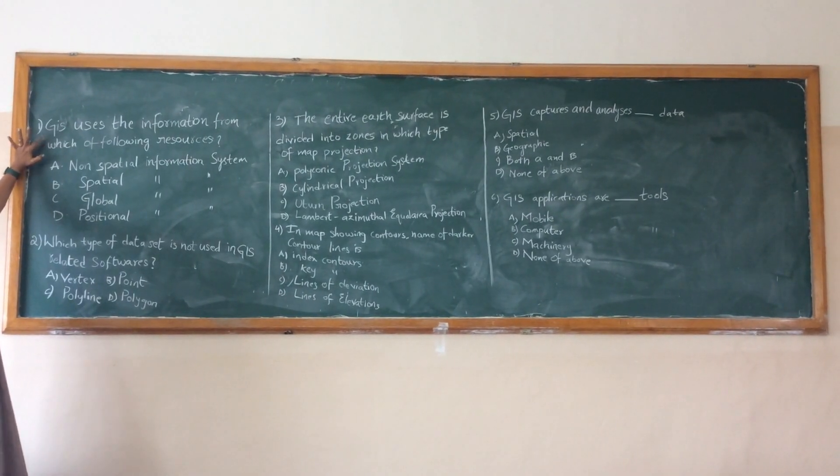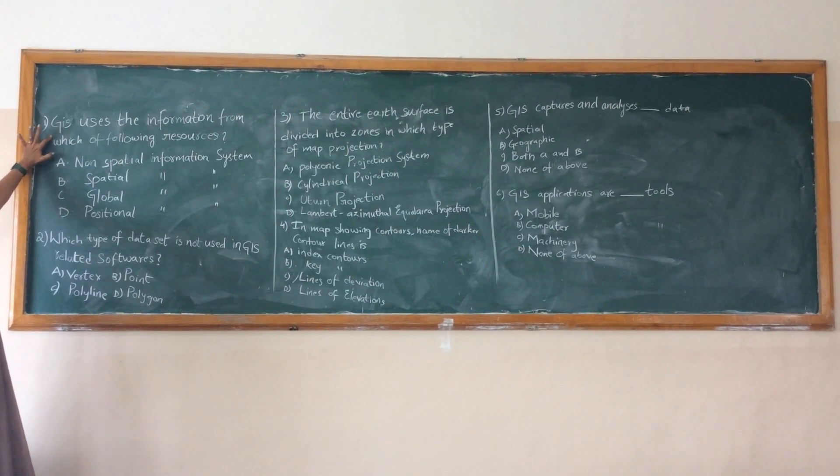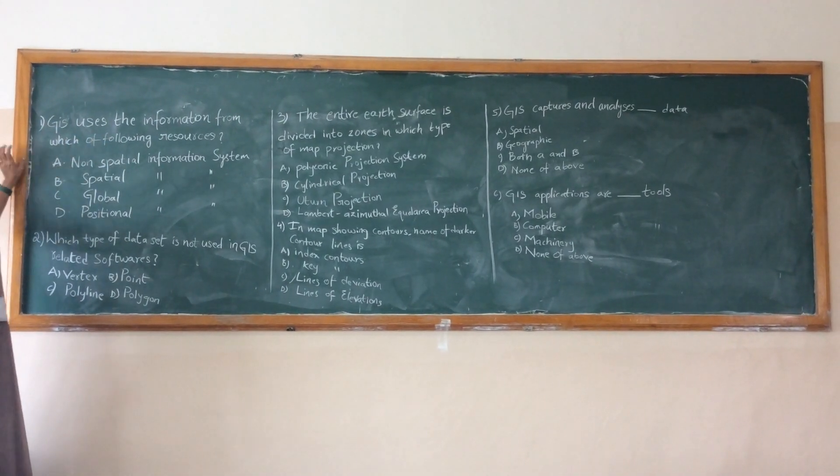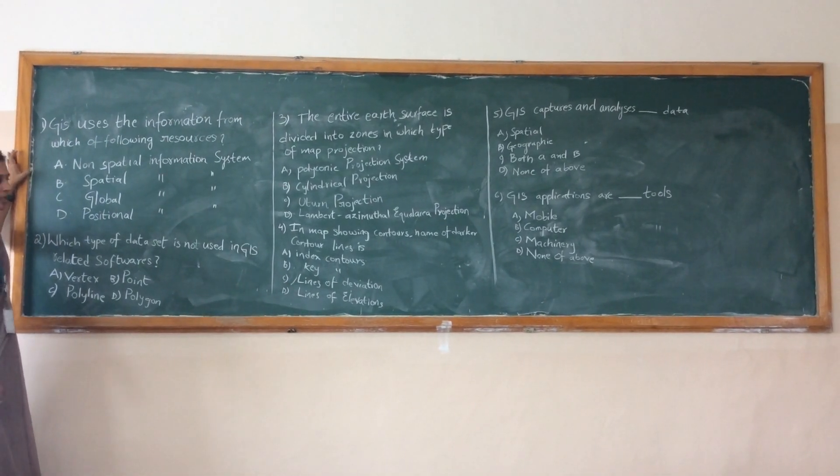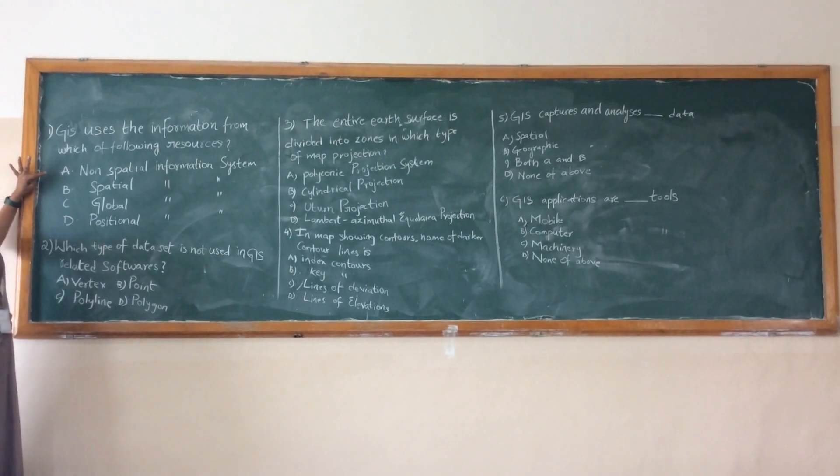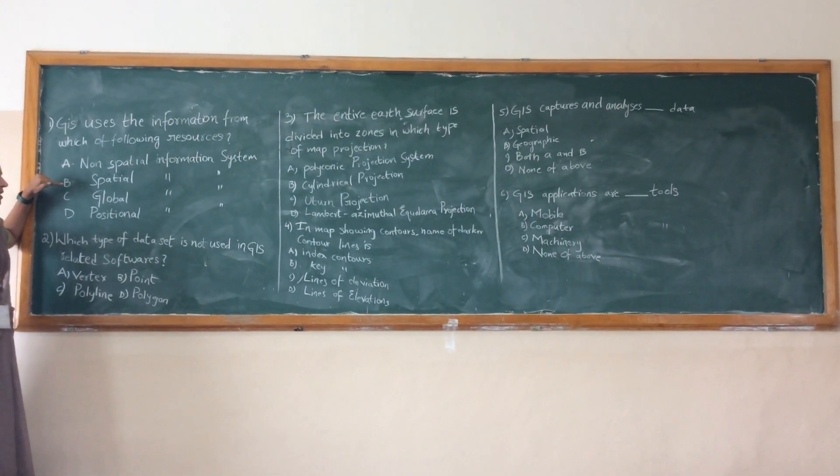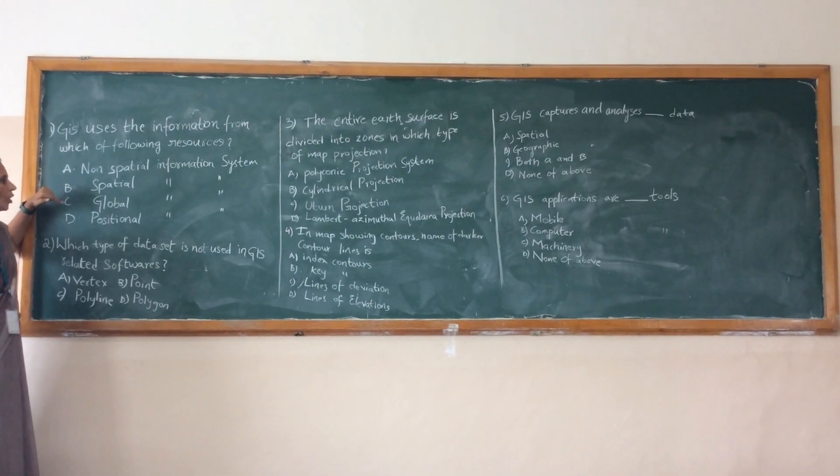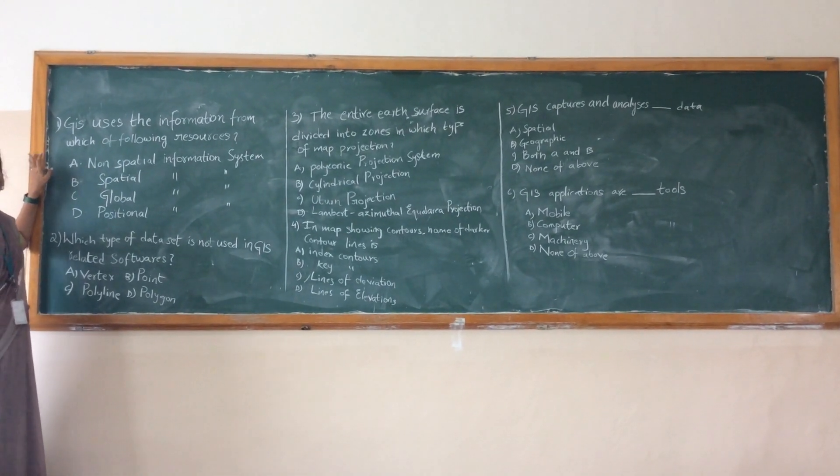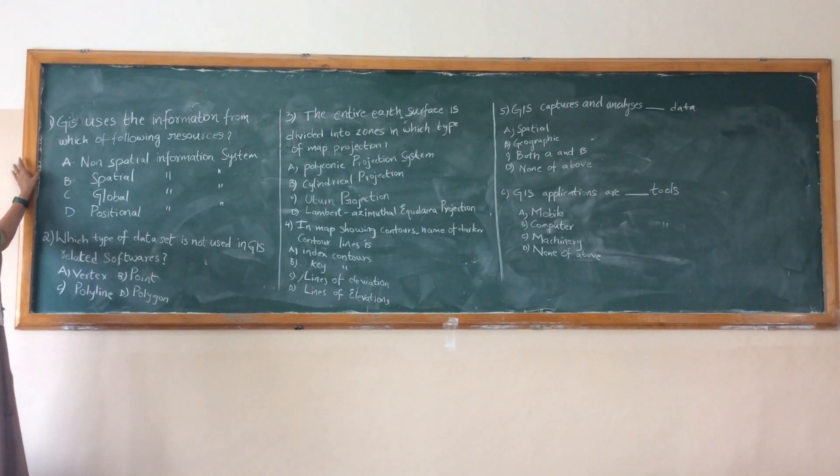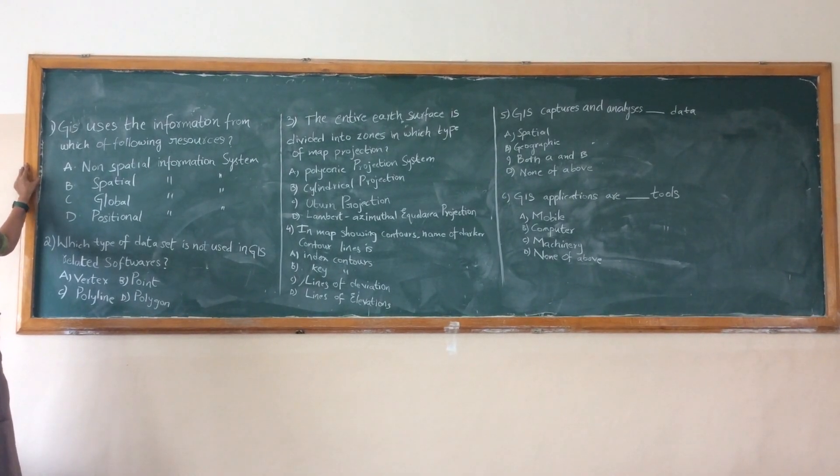GIS uses the information - you know that GIS is nothing but geographical information system. GIS uses the information from which of the following resources. Please note about which of the following resources. One is the non-spatial information system, spatial information system, global information system, and then the positional information system. Among all these four, which is the correct answer? Please answer.